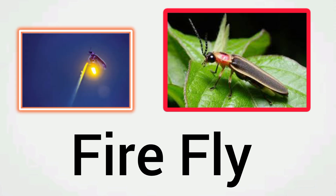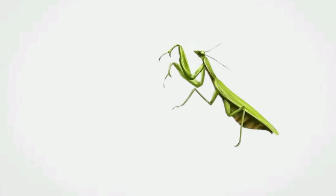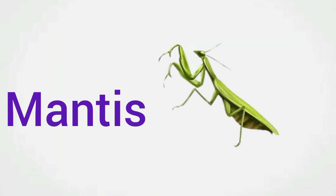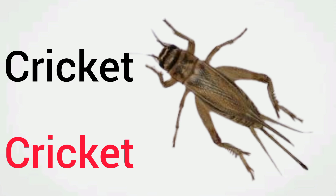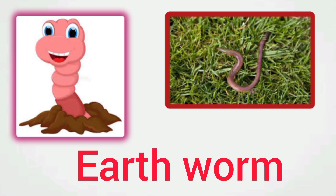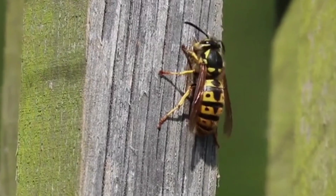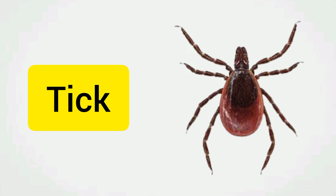This is firefly. Say with me: firefly. Next insect name is cricket. This is cricket. Next insect name is earthworm. This is earthworm. Say with me: earthworm. Next insect name is wasp. This is wasp. Next insect name is tick. This is tick.